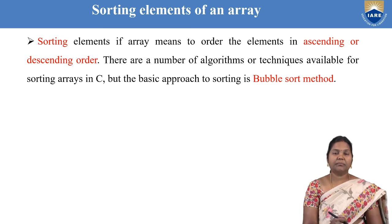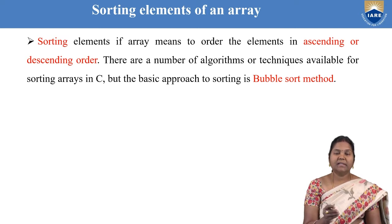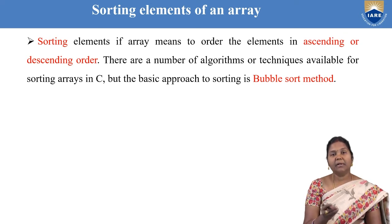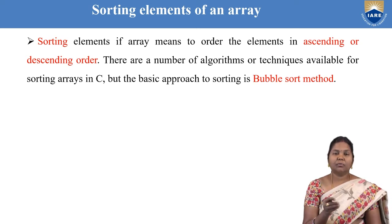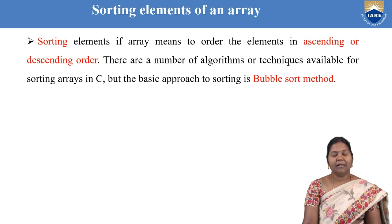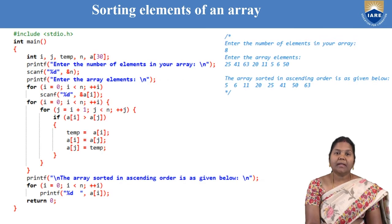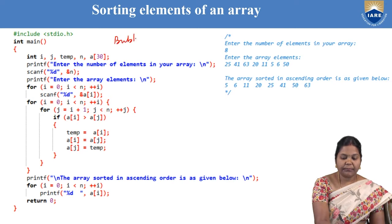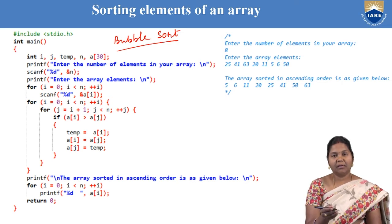The next operation you can perform on an array is sorting. Sorting is performed to arrange elements in ascending or descending order — the default order is ascending. There are multiple algorithms to sort elements. The most common and simplest algorithm is called bubble sort. Let us see an example of how to do bubble sort and convert an array into sorted ascending order.